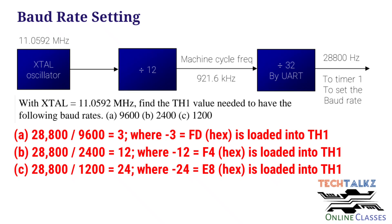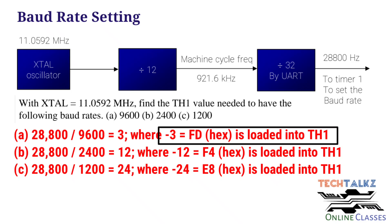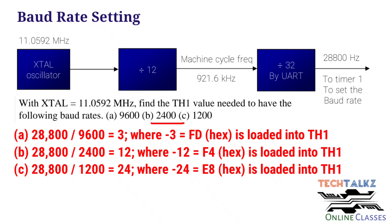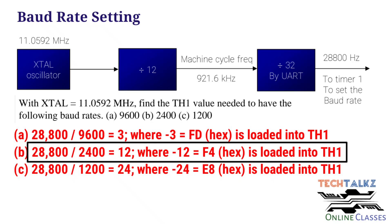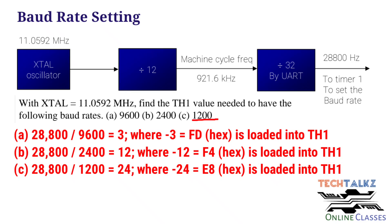The baud rate is used to calculate the initial value for Timer 1 Mode 2 (auto-reload mode). The value passed into TH1 register is calculated as: Timer 1 frequency divided by the required baud rate — that is 28800 divided by 9600 equals 3. So TH1 = minus 3, or hex value FD. For another example, if the required baud rate is 1200, then 28800 divided by 1200 equals 24, so TH1 = minus 24, or hex value E8.